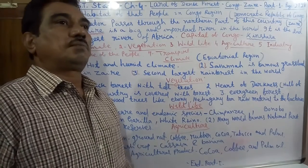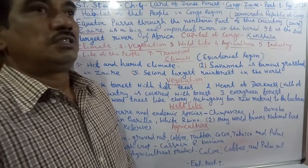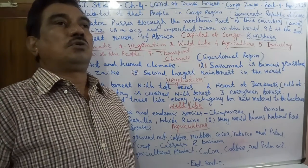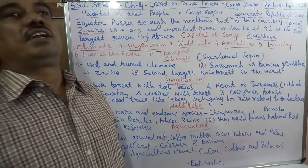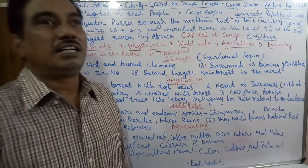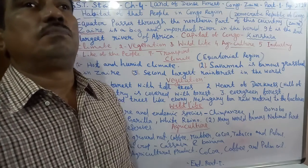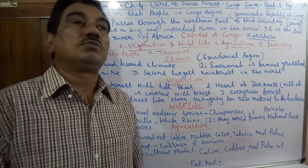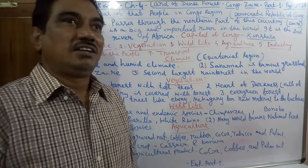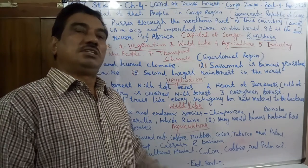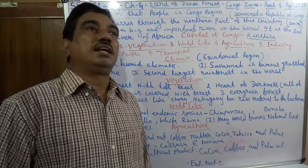Welcome to the Thunderfile students. Today we will start Chapter 4, Part 1: The Land of the Dense Forest. That is called Congo — the Democratic Republic of Congo, otherwise known as Gyre. This is the first part and the pages are 27 and 28.